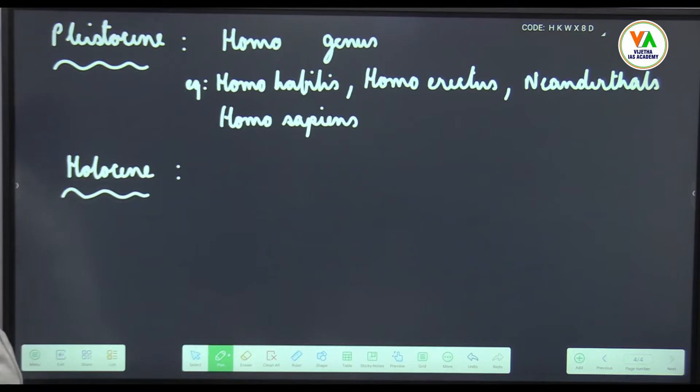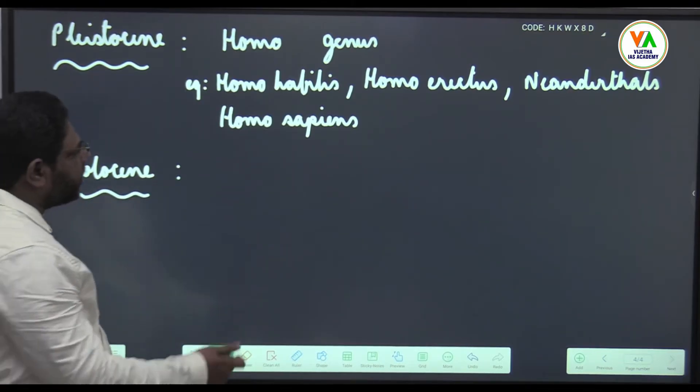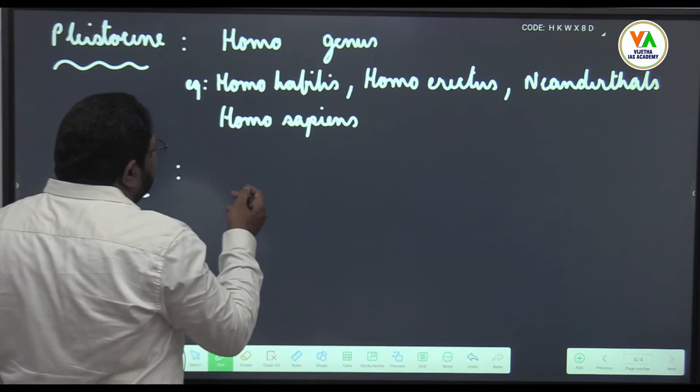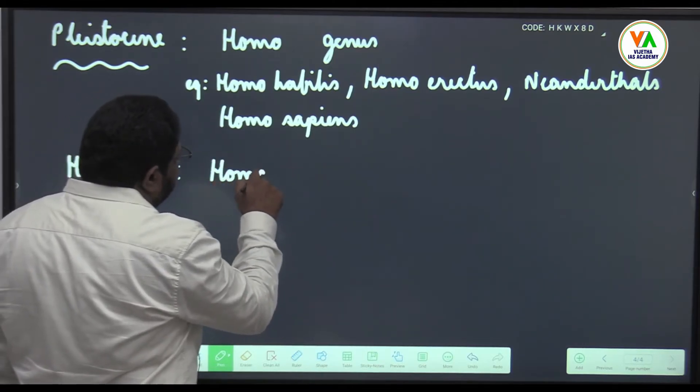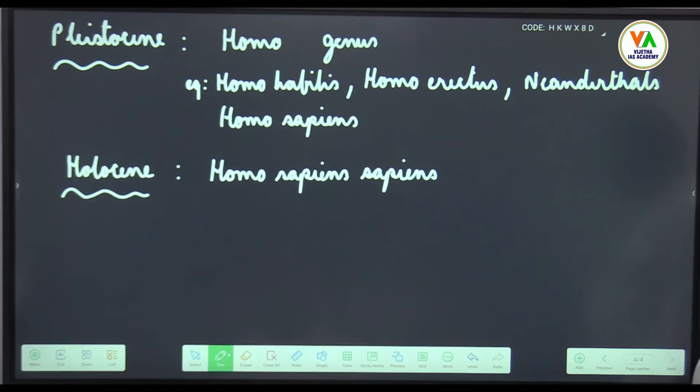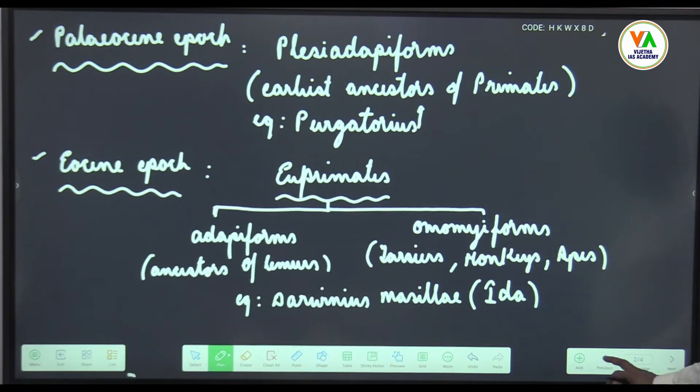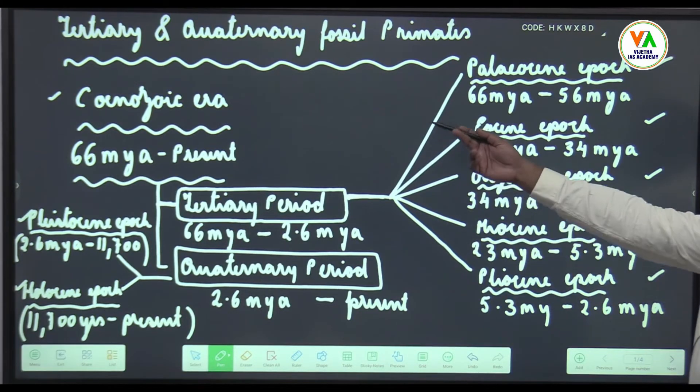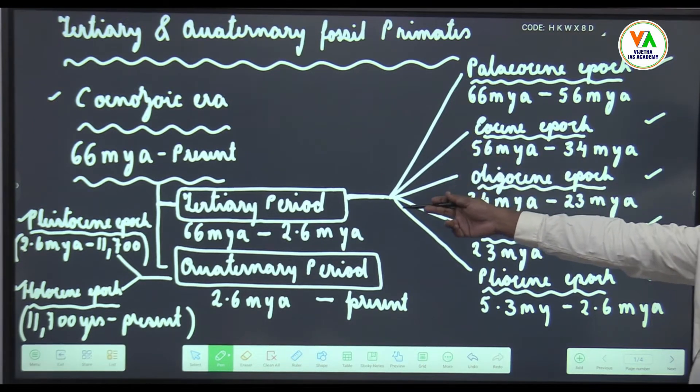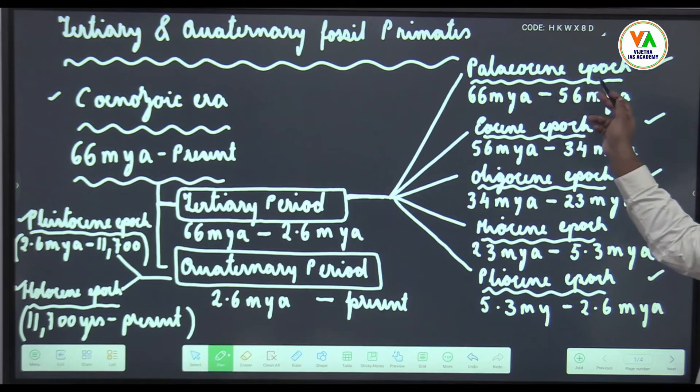Just to show more specialization or more further progressment, I will write Homo sapiens sapiens. This tertiary and quaternary fossil primates, we are in the era Cenozoic. Era is a larger time period, period is smaller time period and much smaller time period is epoch.